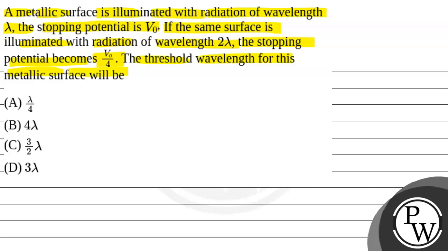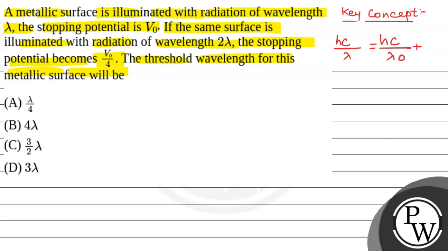We will solve this question. First of all, we will see what the key concept is. According to Einstein's photoelectric equation, we have hc/λ = hc/λ0 + eVs, where Vs is the stopping potential, λ0 is the threshold wavelength, and λ is the wavelength of the incident radiation.